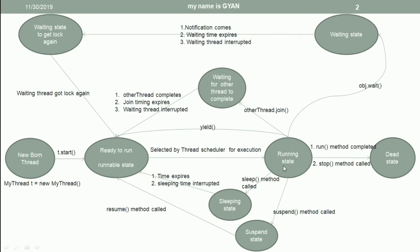If a thread is in the running state and is waiting for another thread to complete by calling the join method on the other thread, then the thread will go into a waiting state where it waits for the other thread to complete. After completion of the other thread, or if the join time expires, or if the waiting thread is interrupted — in all three cases, the waiting thread will go to the ready to run state.